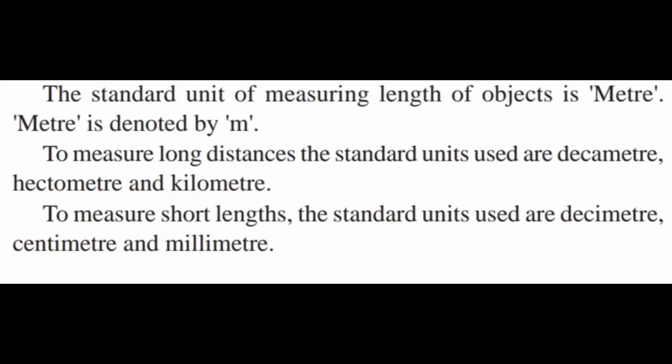The standard unit of measuring length of an object is meter. Meter is denoted by small m. To measure long distances, the standard units used are decameter, hectometer, and kilometer. To measure short lengths, the standard units used are decimeter, centimeter, and millimeter. These are very important points to remember.